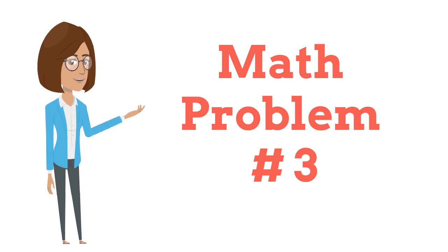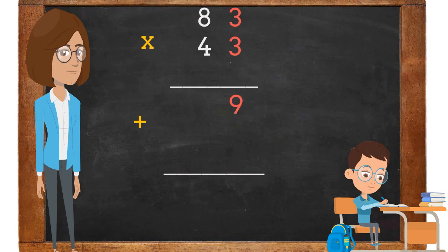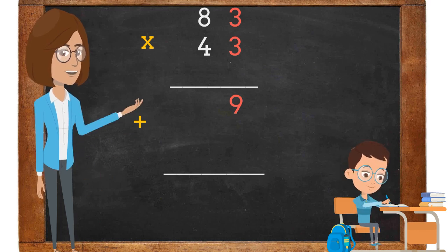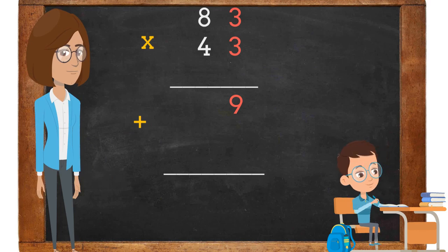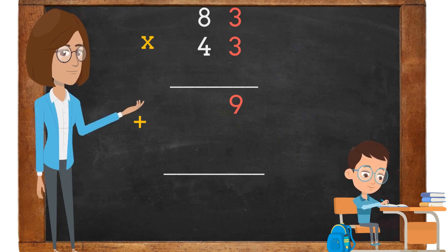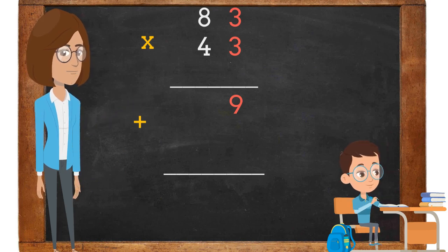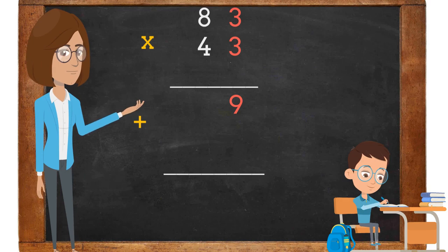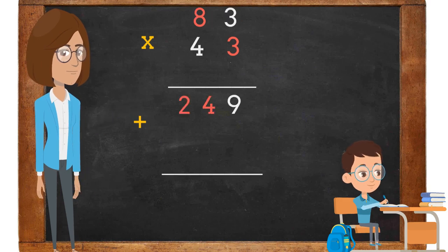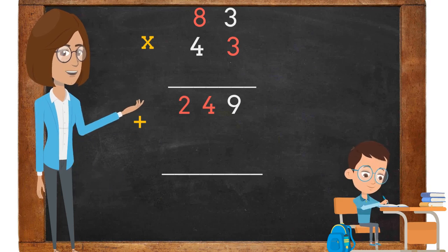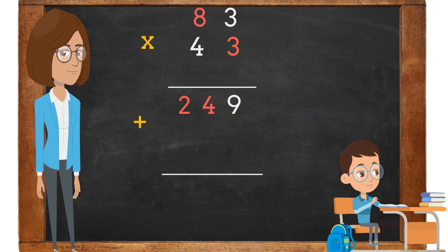Math problem number 3. We are going to start this problem by multiplying 3 times 3. 3 times 3 is 9. The 9 goes under the 3 in the ones place. Next, we are going to multiply 3 times 8. 3 times 8 is 24.